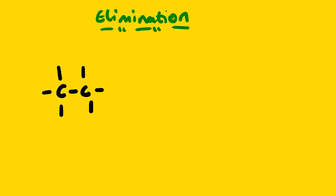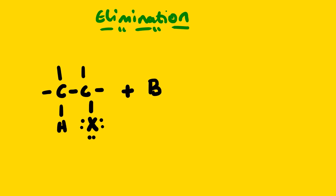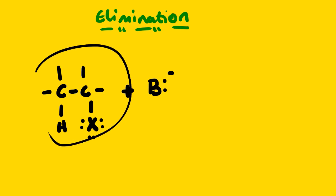Let us look at general equations. Suppose we have an alkyl halide undergoing elimination to form an alkene. We know that X represents our halide. We have an alkyl halide reacting with a base. In this case we don't talk about nucleophiles — elimination and substitution reactions go hand in hand, we can say they compete. Under nucleophilic substitution reaction we have a substrate and a nucleophile, but in this case we have an alkyl halide and a base.